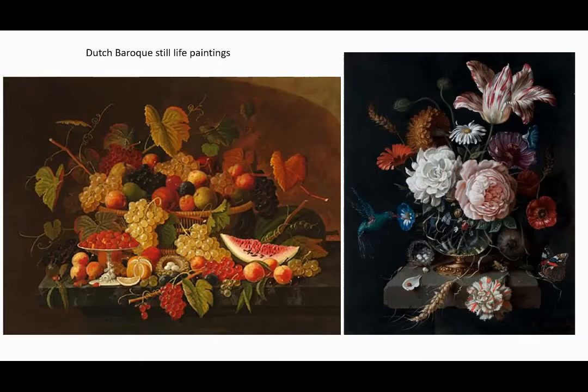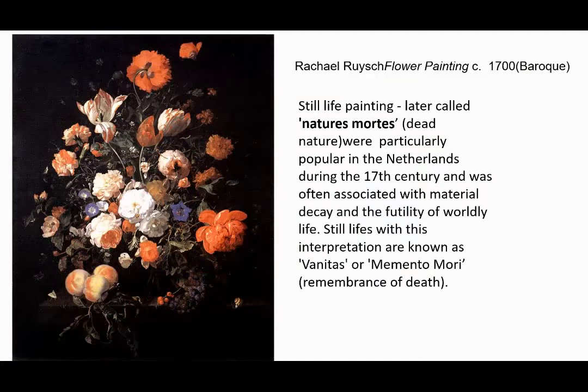If flowers wilted or fruit rotted, artists could substitute new ones and no one would know by looking at the finished painting. However, the decay of fruit and flowers was featured symbolically in traditional still life paintings.